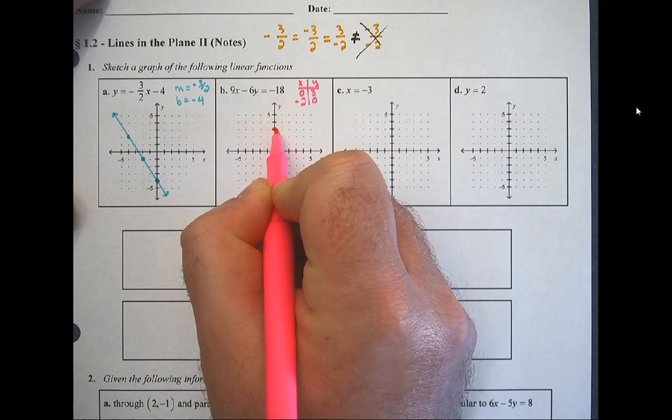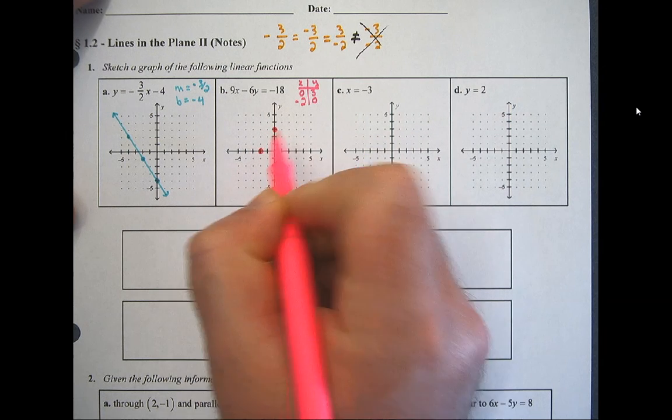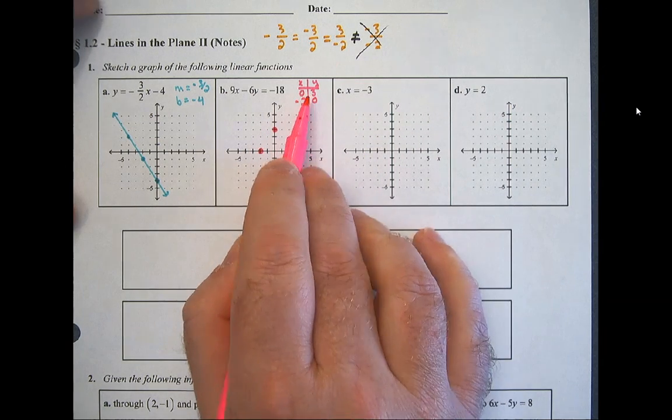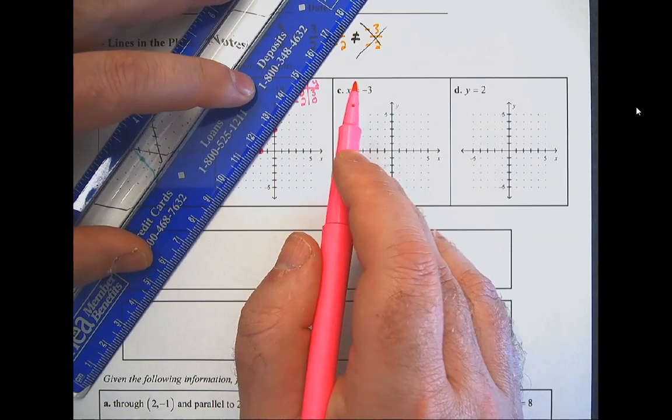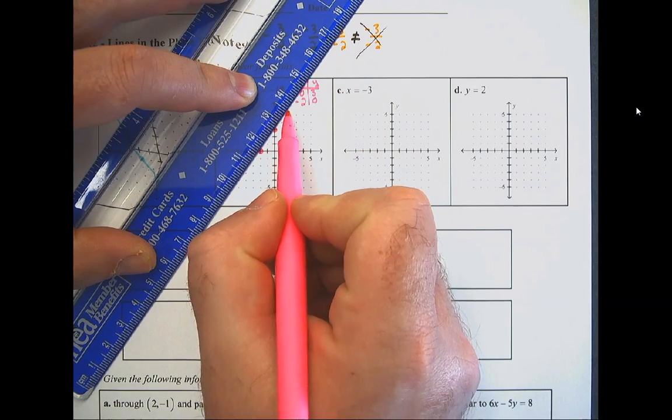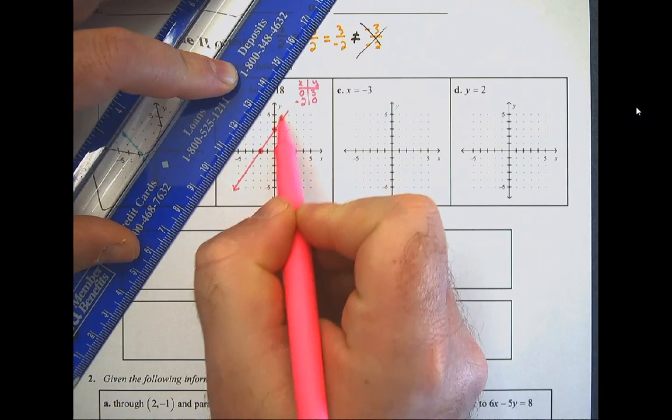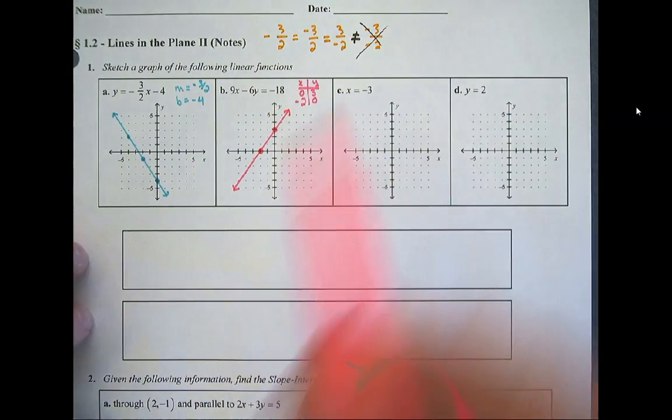And then I go ahead and graph these. 0, 1, 2, 3. Negative 2, 0. The only thing you have to be careful of is which way you're moving - make sure that you're drawing the x-intercept on the x-axis and the y-intercept on the y-axis. Then grab your straight edge, play connect the dots, and you're good to go.